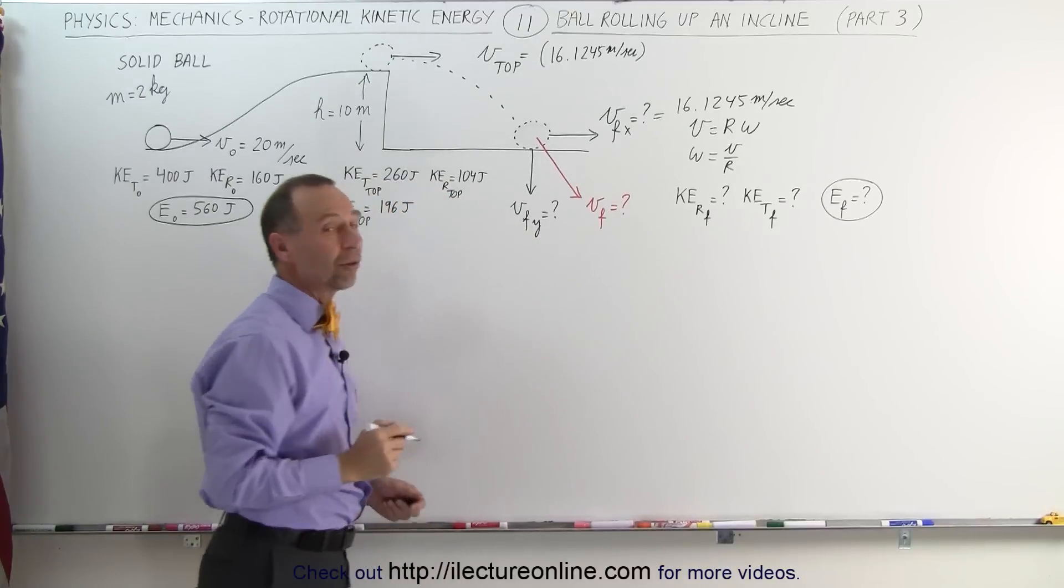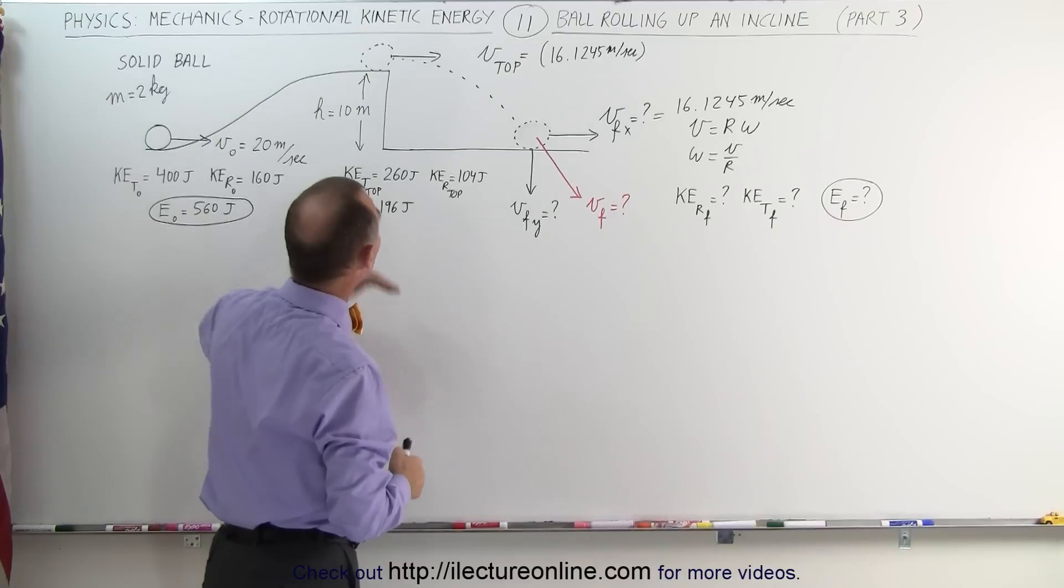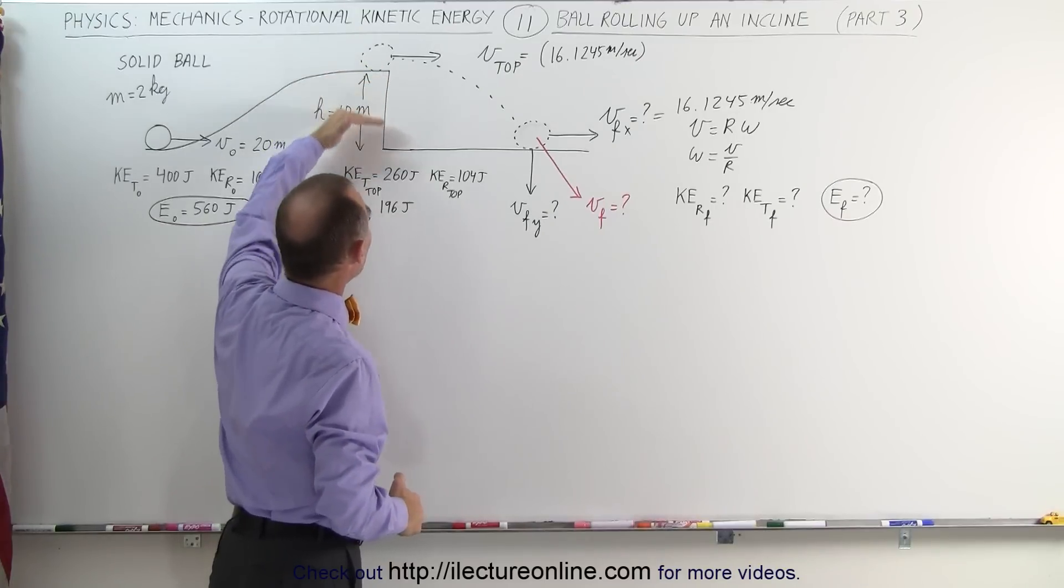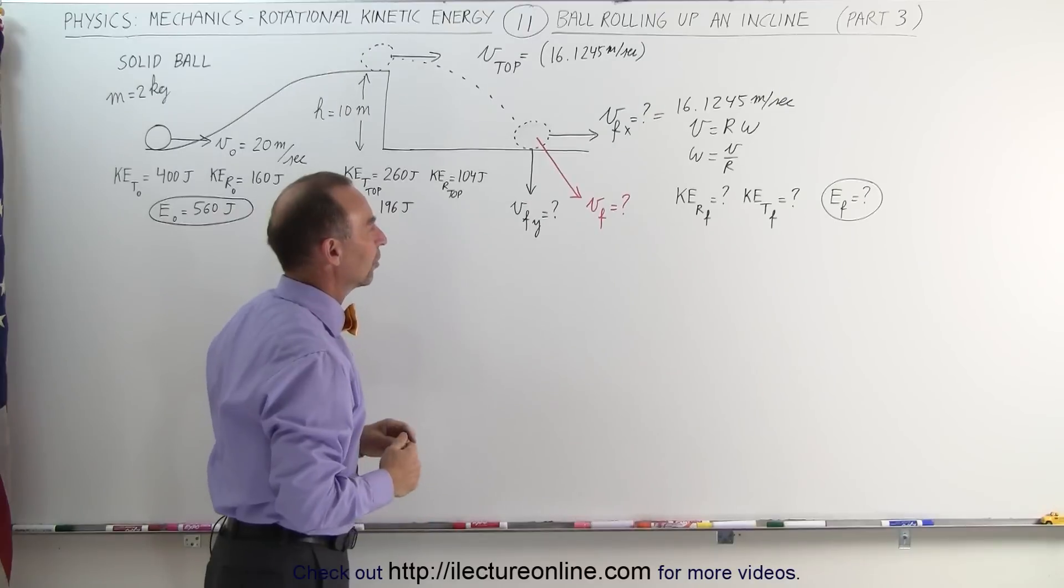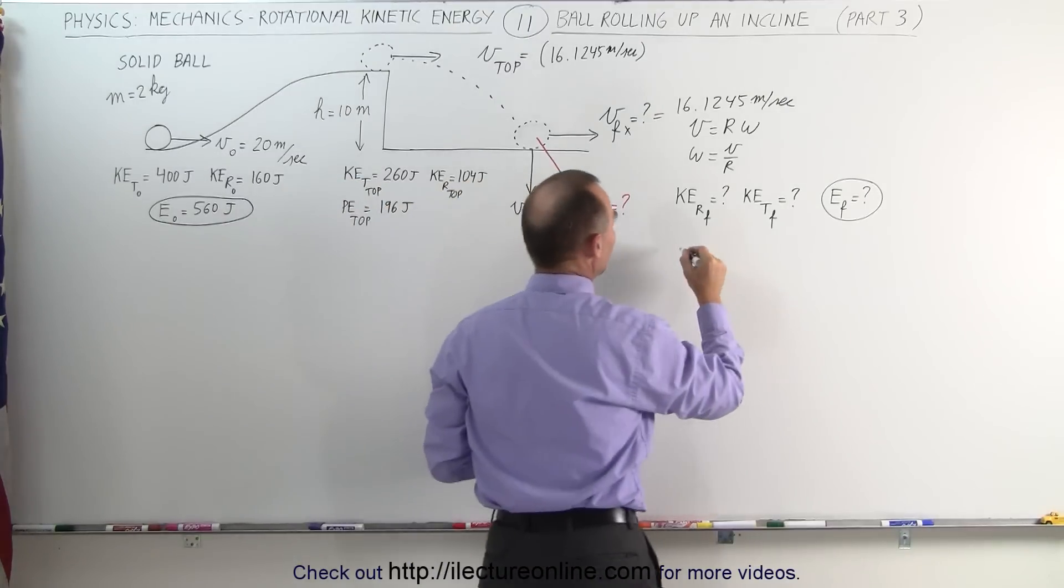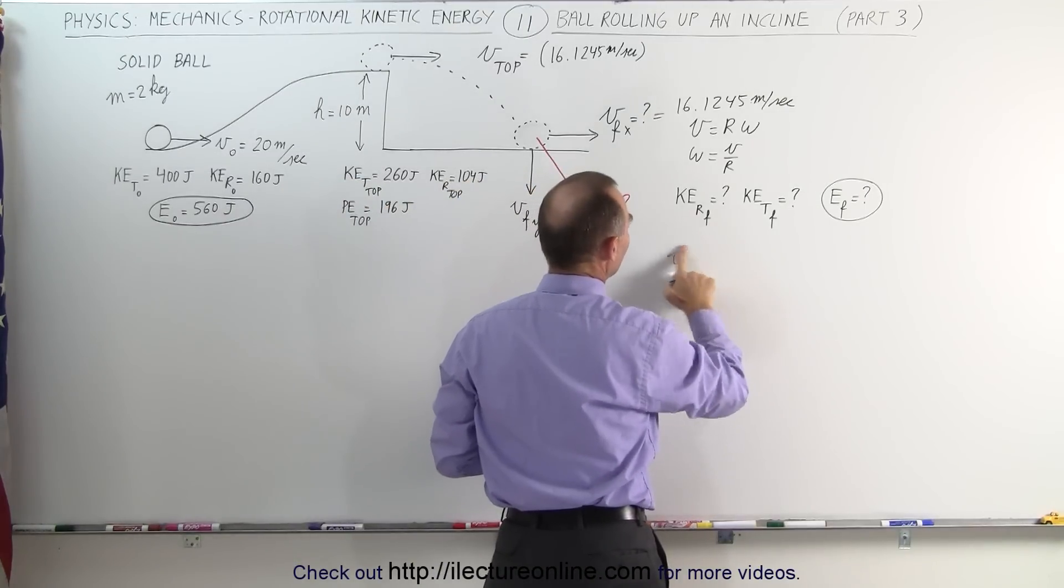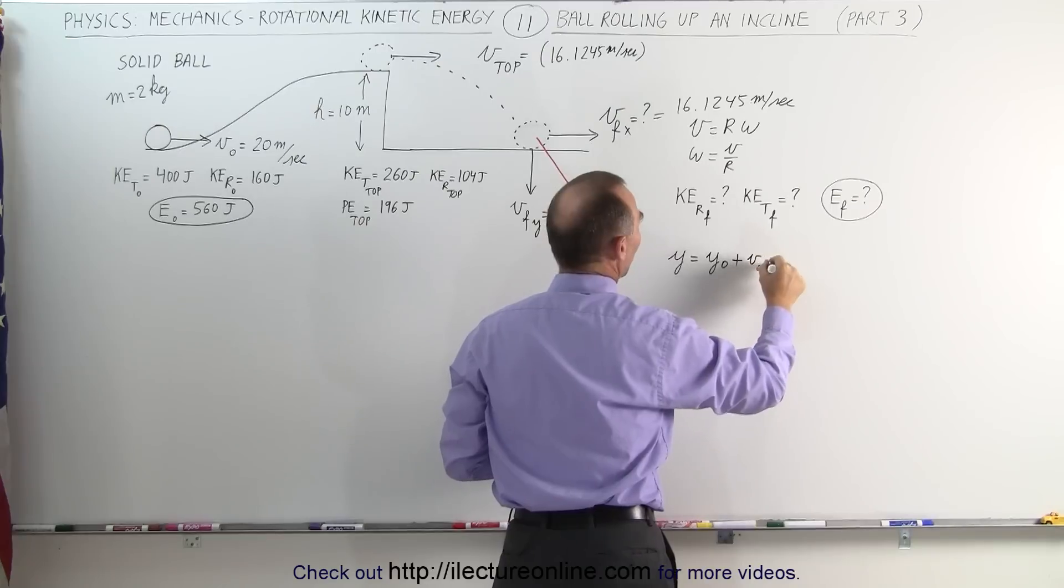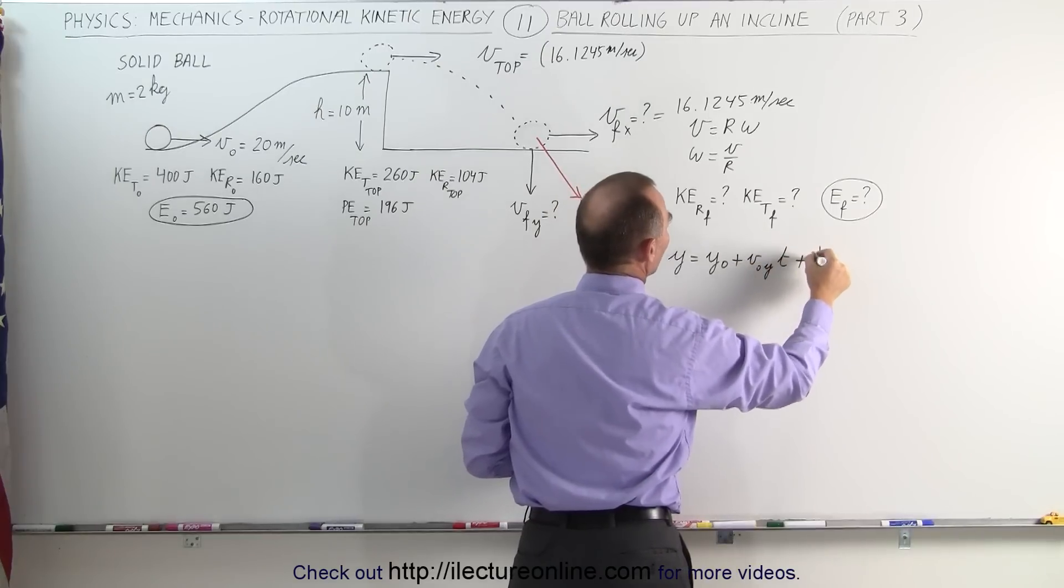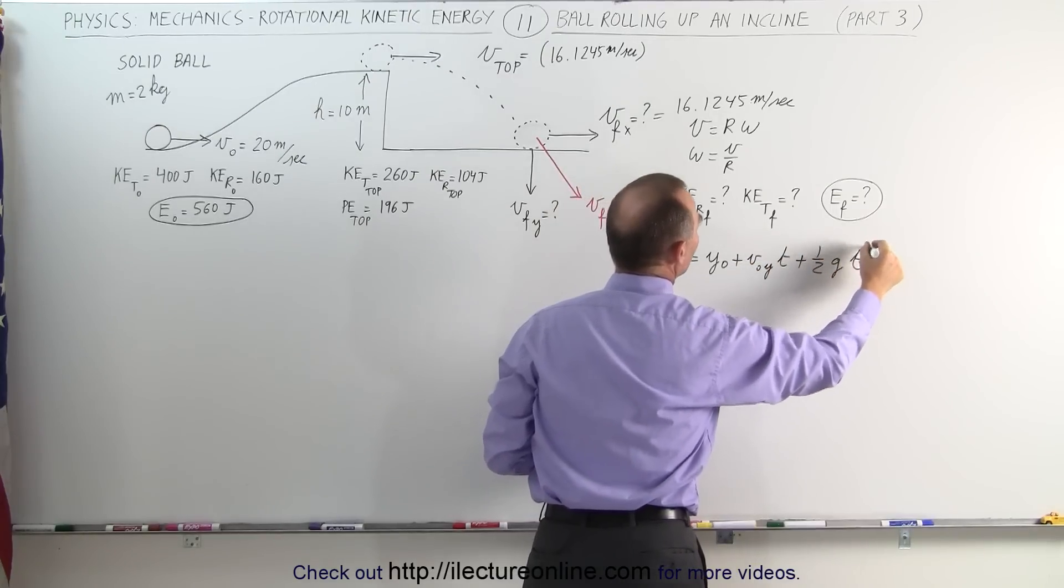What about v final in the y-direction? Well, that velocity can be found by assuming the object drops from that height with initial velocity of zero in the y-direction. We can use this equation: y equals y initial plus v initial in the y-direction times time plus 1/2 g t squared.